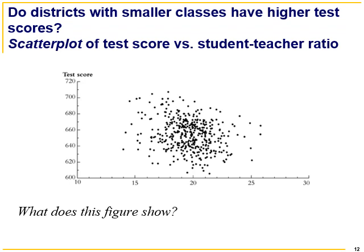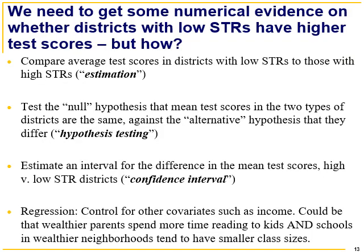Do districts with smaller classes have higher test scores? What you see below is a scatter plot of test scores versus student-teacher ratios. What does this figure show? You should be looking at it and saying you can't really tell if there's a relationship here — there's no obvious downward sloping or upward sloping line. It's just a mess of dots indicating that this is a messy relationship. So the scatter plot isn't really helping us much.